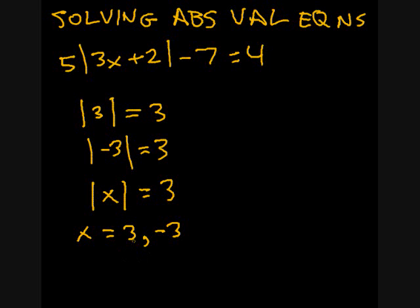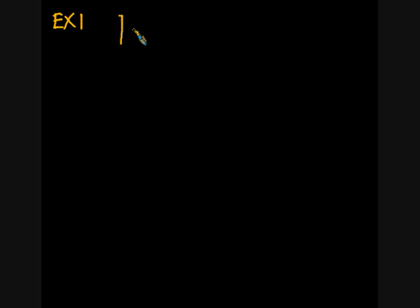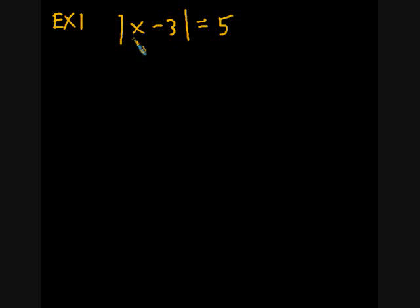Let's expand on this. Here's Example 1: what if we have the absolute value of x minus three equals five? The very first thing I want to say is that a commonly made mistake is that people want to change this into x plus three. You cannot do that, and there's no need to. The absolute value does not change the sign of all the different things inside the absolute value signs.